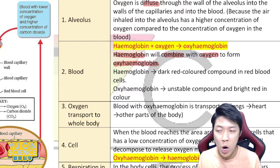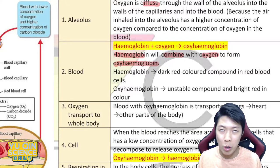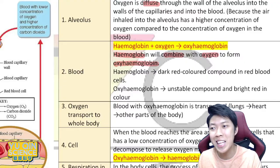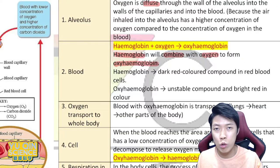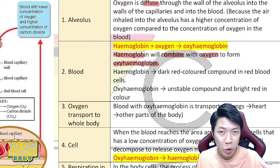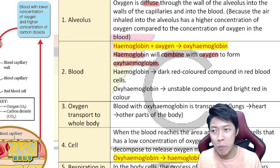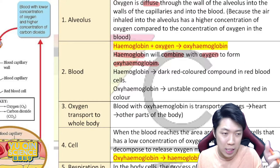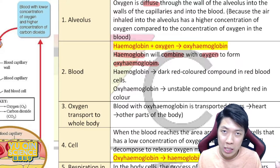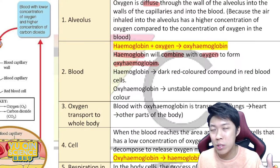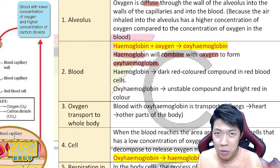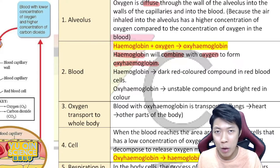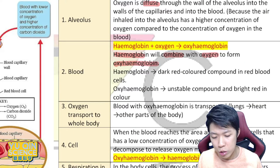When the red blood cell carries oxygen, it will bind with the hemoglobin in the red blood cell. Each red blood cell has many hemoglobins and each will carry an oxygen molecule. Think of it like a bus: the red blood cell is the bus, hemoglobin is the seat, and oxygen gets on the bus, picks a seat, sits down, and waits for the bus to fill up.